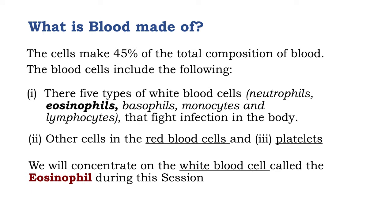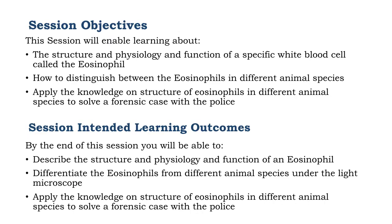45% of the total composition of blood is blood cells. There are five types of white blood cells: neutrophils, eosinophils, basophils, monocytes, and lymphocytes. The other cells in the blood are the platelets and the red blood cells. This session will concentrate on the white blood cell called the eosinophil.